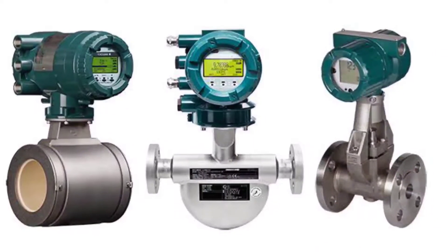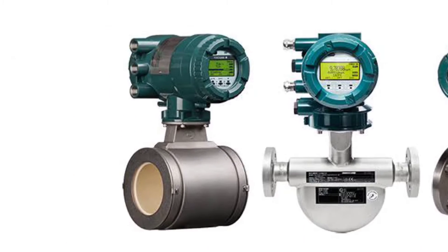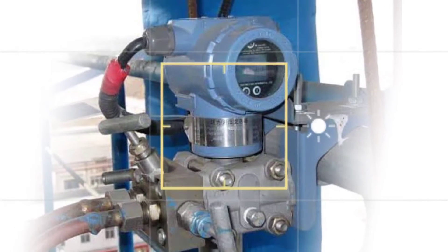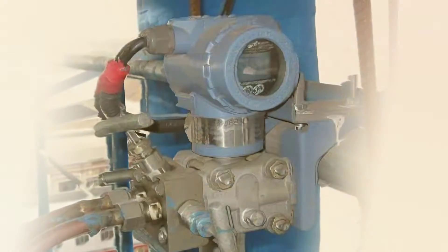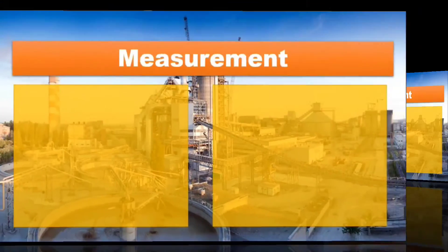Actually, all the flow meters are flow transmitters. But today we will understand DP type flow transmitter. The next comparison is measurement.